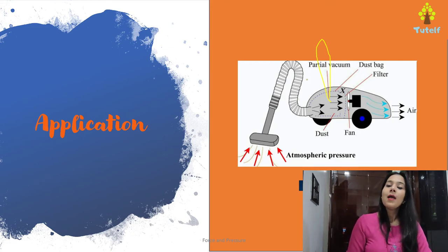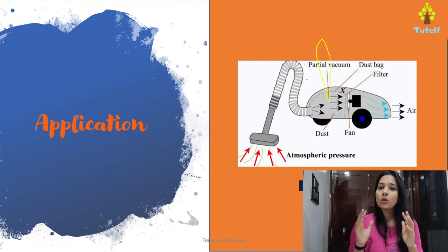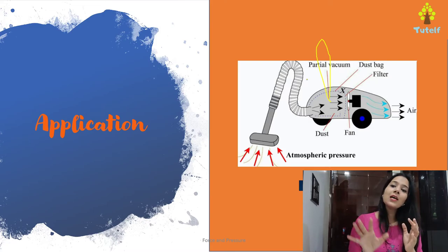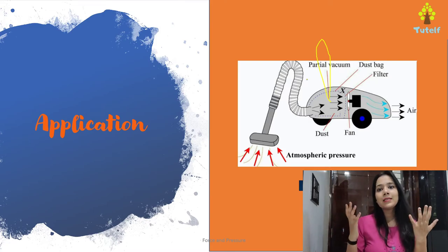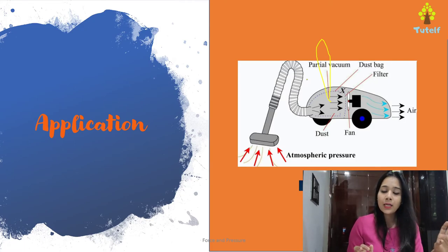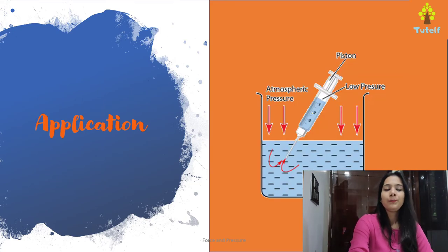What is vacuum? Vacuum is when the number of particles inside a container are removed. As soon as all the particles are removed, there is a vacuum, and since there is no particle, no force is applied. So we have an area of low atmospheric pressure.